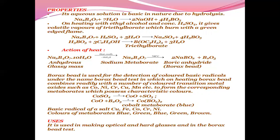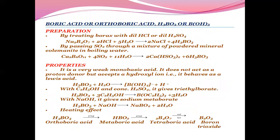To form the corresponding metaborates which possess characteristic colors. Basic radicals of the salt - copper, iron, cobalt, chromium, nickel - give blue, green, blue, green, brown type of colors. It is used in making optical and hard glasses and in the borax bead test.